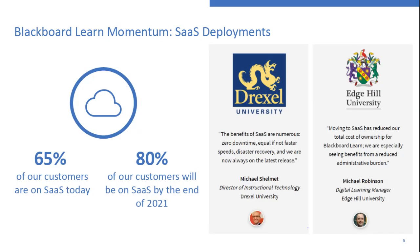Regarding the transition to SaaS, we are making really good progress. As of today, we have 65 percent of our customers on SaaS and we expect to be at 80 percent by the end of the year. We are on track — actually slightly ahead — to move all clients within the timeframe we discussed.